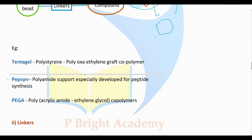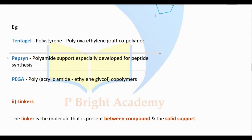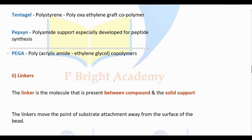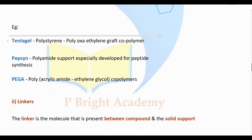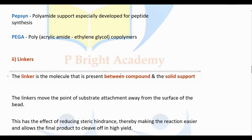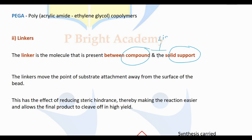Other examples of solid supports are Tentagel and PEGA. Tentagel is polystyrene-polyoxyethylene graft copolymer. Polyamide support is especially used for developing peptide synthesis. PEGA stands for polyacrylamide-ethylene glycol. There should be a linker, and the linker is a reagent compound that connects the beads to the compound — it is the main thing present between the solid support and the compound.